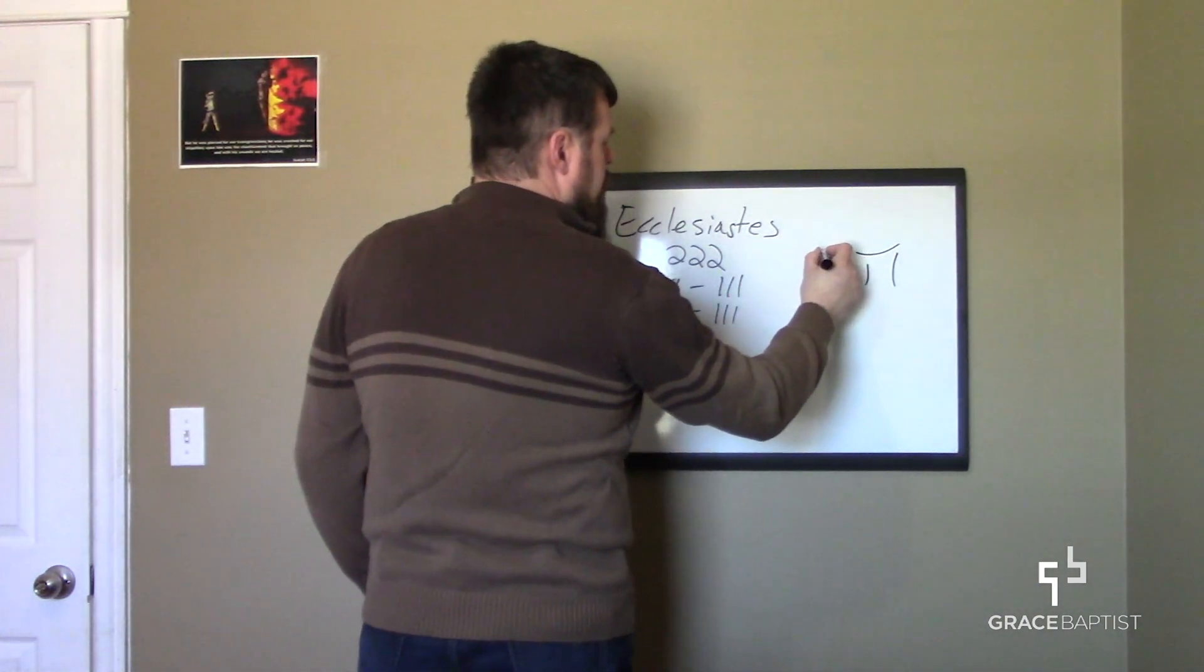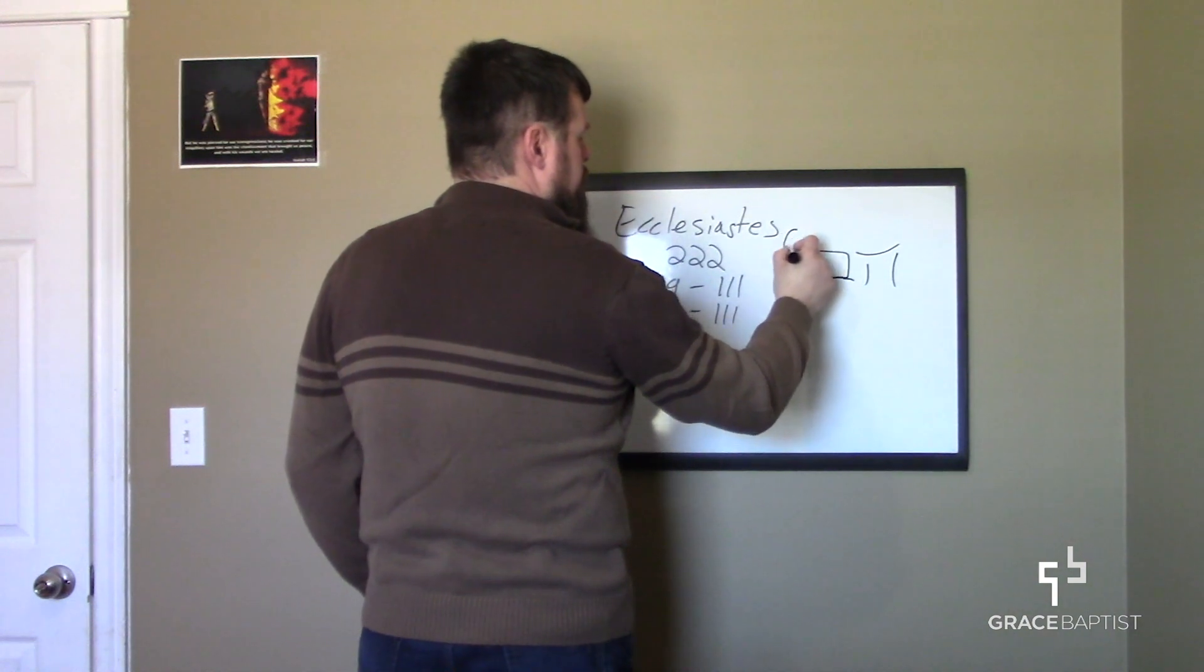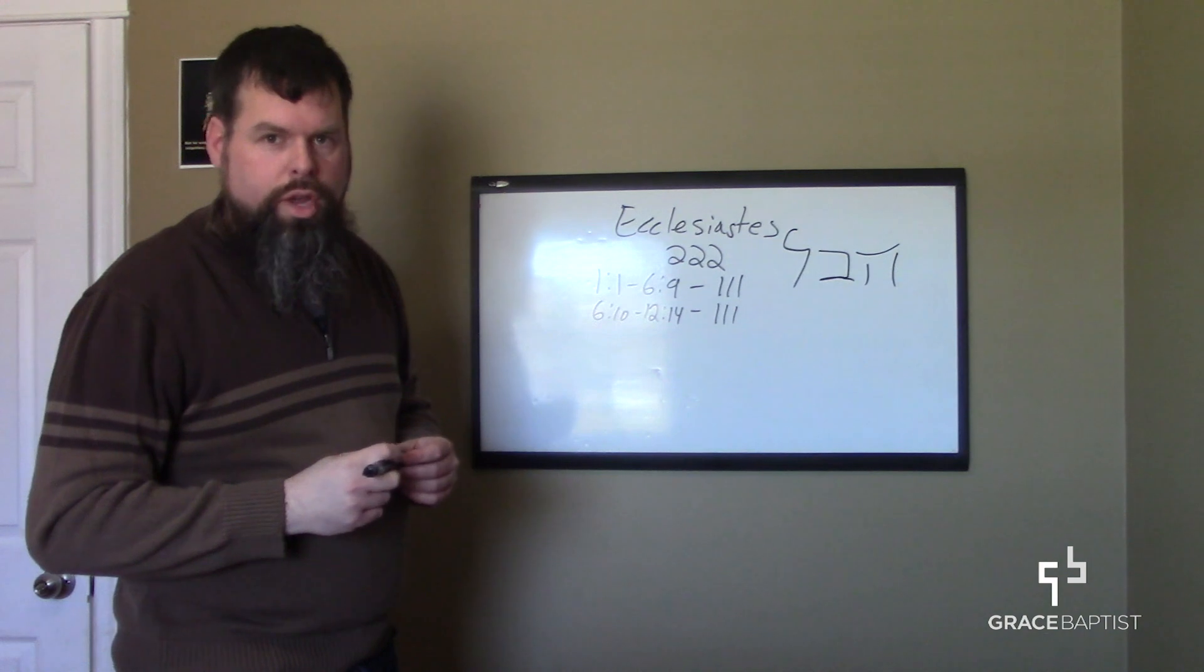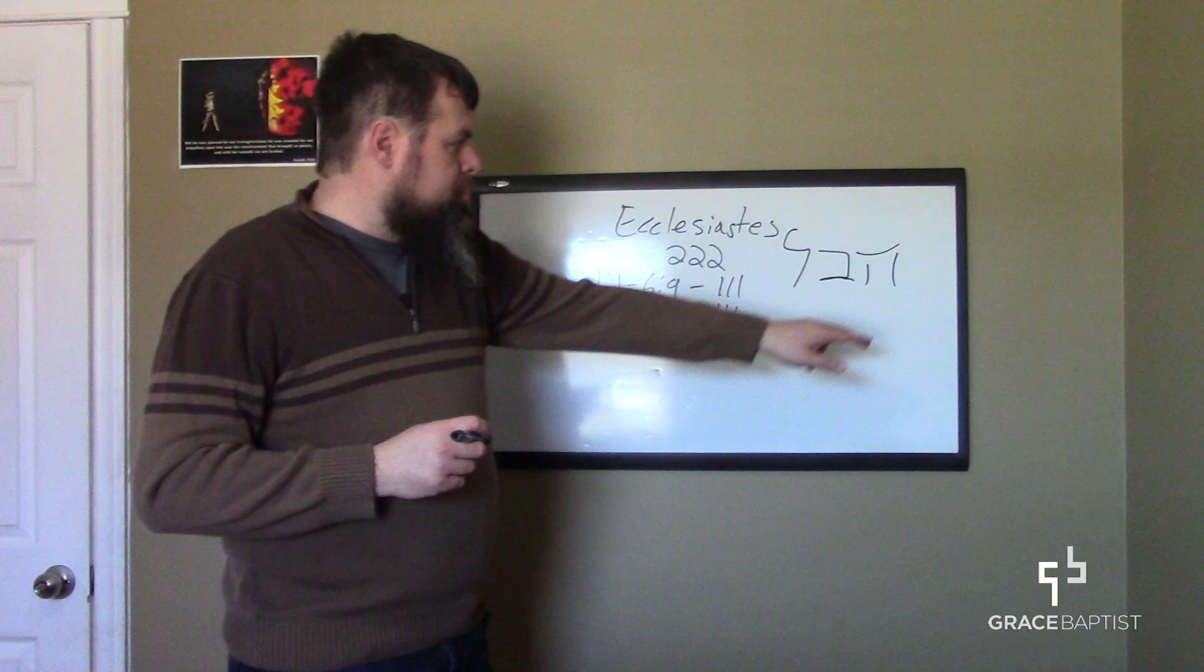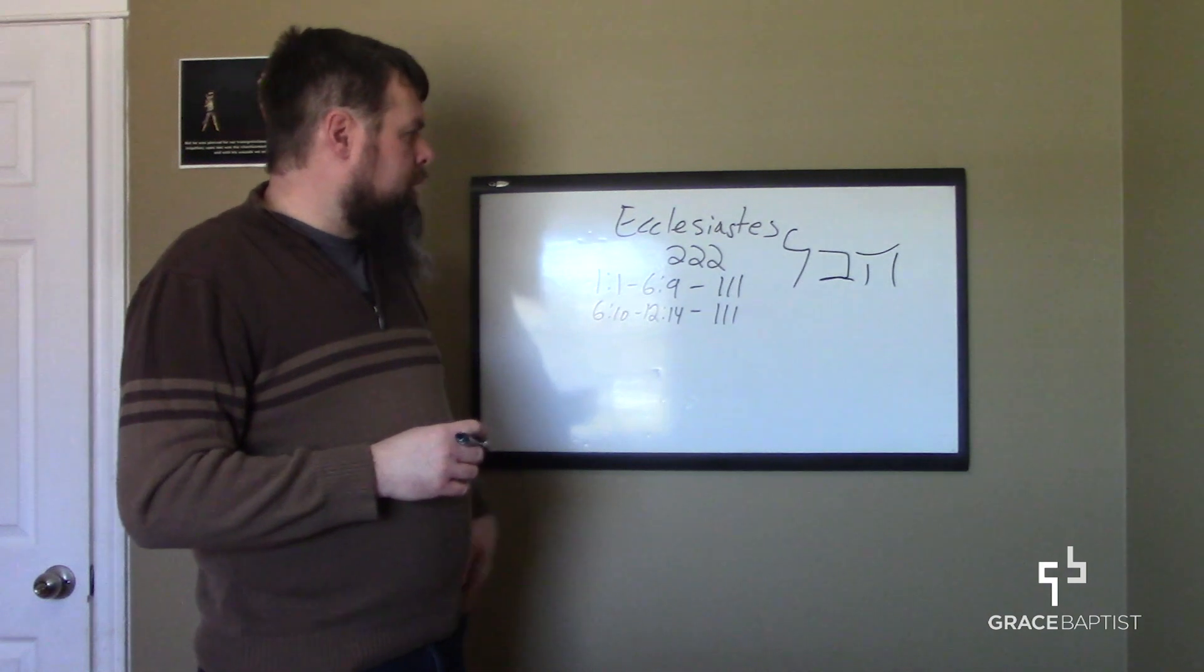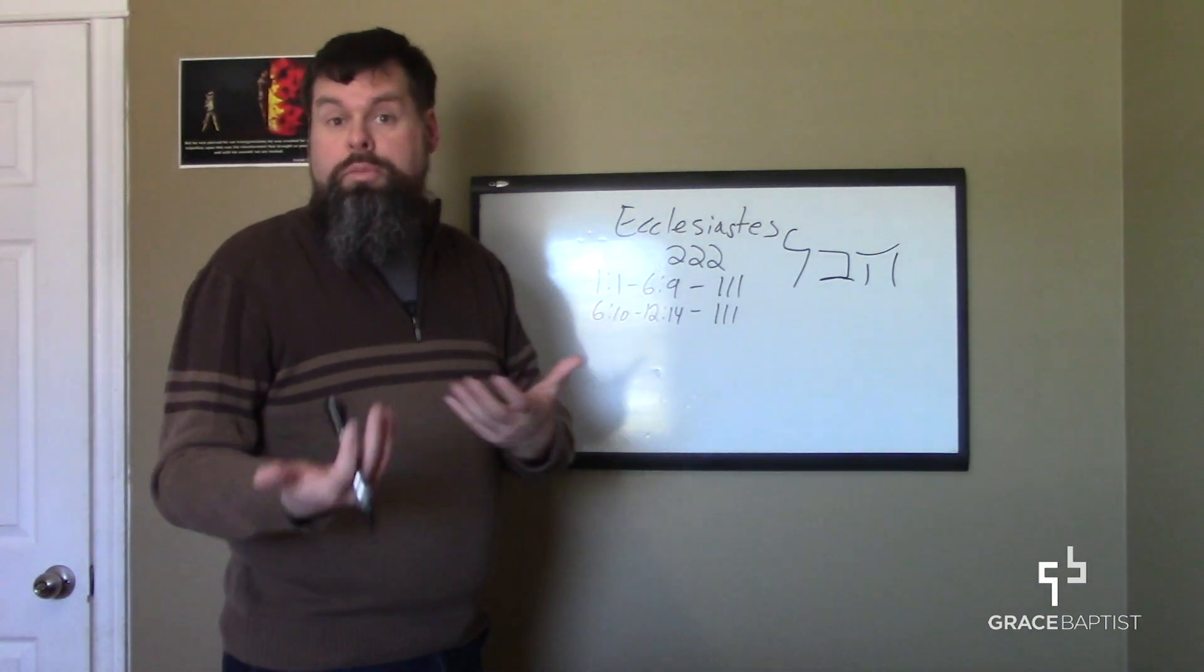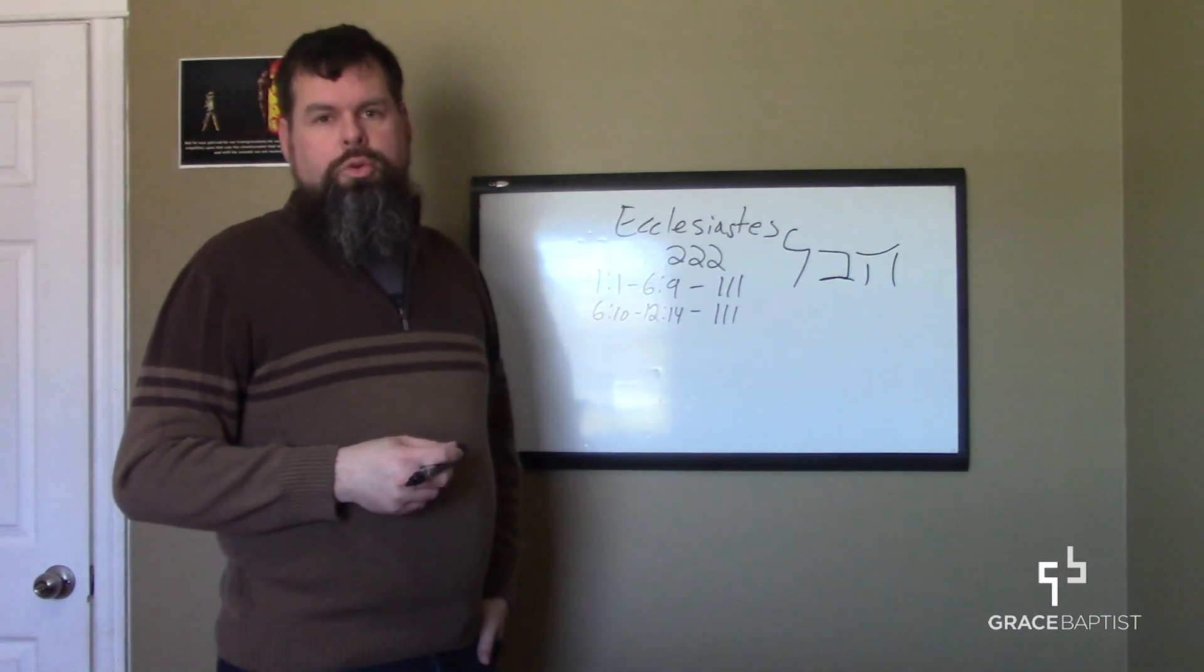Really, please excuse my horrible Hebrew letters because it's been a while since I took ancient Hebrew class. But those three letters, again all consonants, vowels are kind of added later, late in the game. They make up the word that we know as nothingness, meaninglessness, vanity, emptiness, the word that appears repeatedly throughout the book of Ecclesiastes.